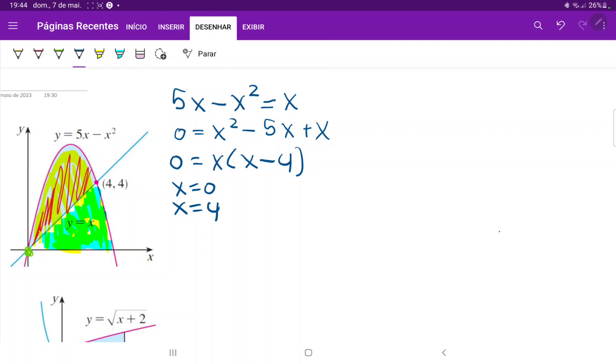So we're ready to set up our integral. It is the integral from 0 to 4. And as we previously said, it is the pink curve minus the blue curve. So this is 5x minus x squared and then minus x.